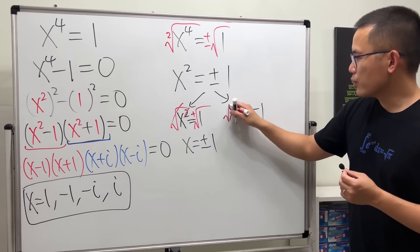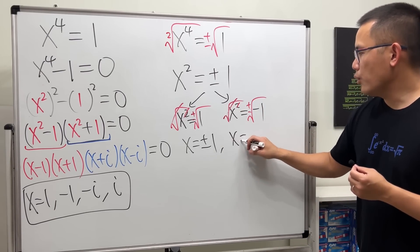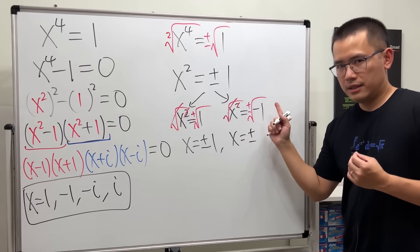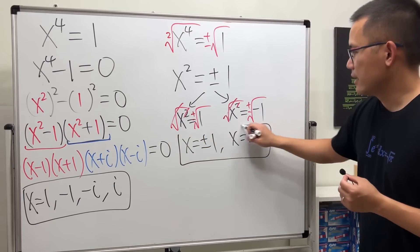And then, right here, we take the square root to both sides, and then put a plus or minus. They cancel. x equals plus or minus the square root of negative 1. Well, we can write that as the imaginary i. And done.